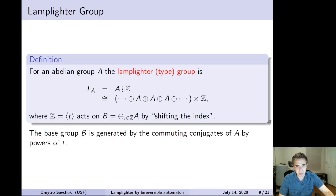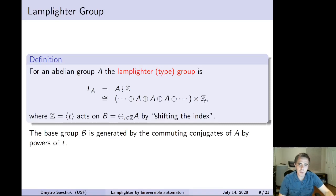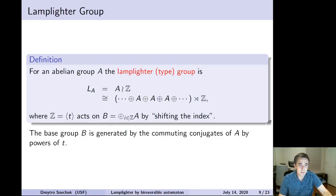Let me recall what the Lamplighter-type group is in general. For an abelian group A, the Lamplighter-type group is a wreath product of A with Z. You start from an infinite direct sum of countably many copies of A, then take a semi-direct product of this sum with Z where the generator t of Z acts on this infinite sum by shifting the index. This base group B is generated by commuting conjugates of A by powers of t. So to build a Lamplighter, we need many commuting elements living in this base group.